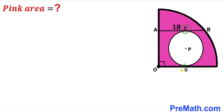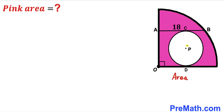Segment AB is 18 units, and O is the center of this quarter circle. Our task is to calculate the area of this pink shaded region.